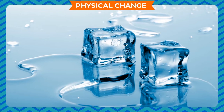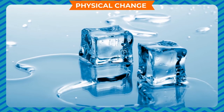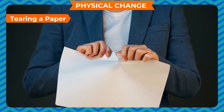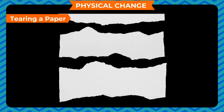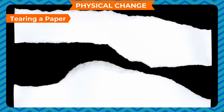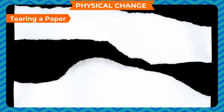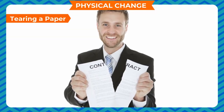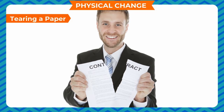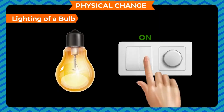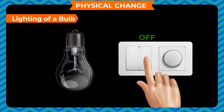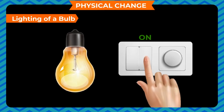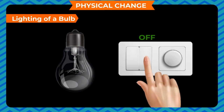We can get water back from ice by reversing the process. Tearing of paper divides it into many parts, changing its shape and size, but there is no change in chemical composition and no new substance is formed — that is why tearing of paper is a physical change. Lighting of a bulb: when you switch on the light the bulb lights up, and when you switch off the light the bulb returns to its original state. No new compounds are formed, so the change is physical and reversible.